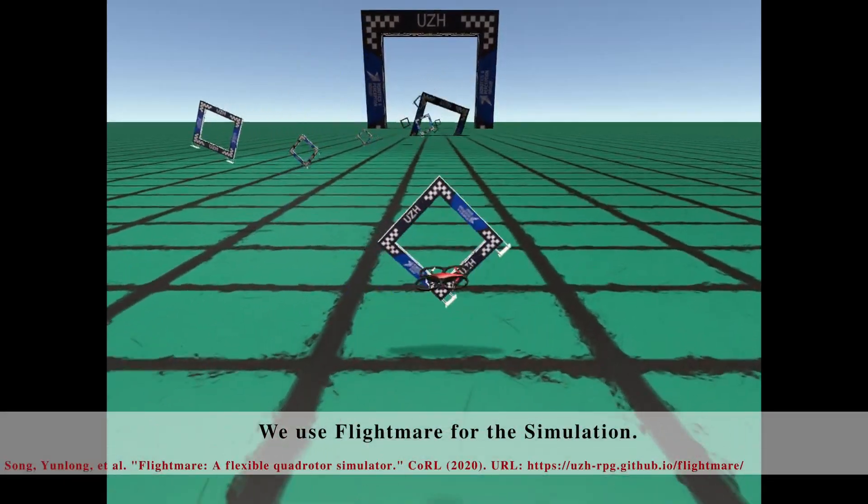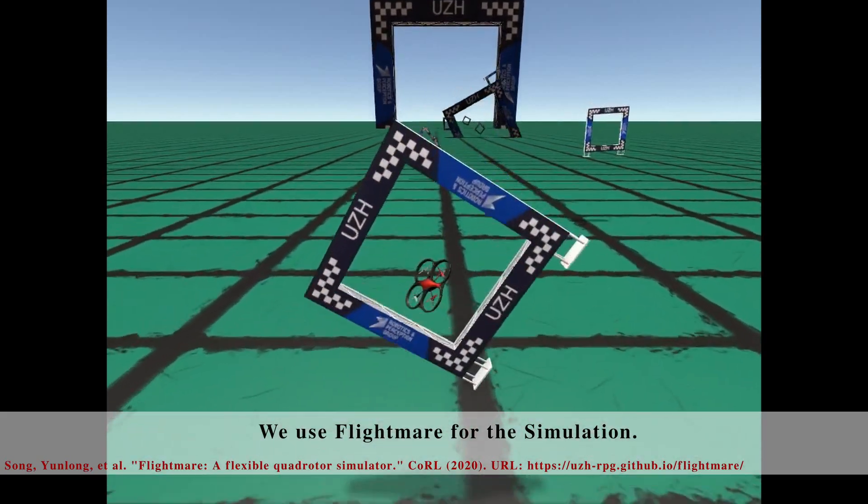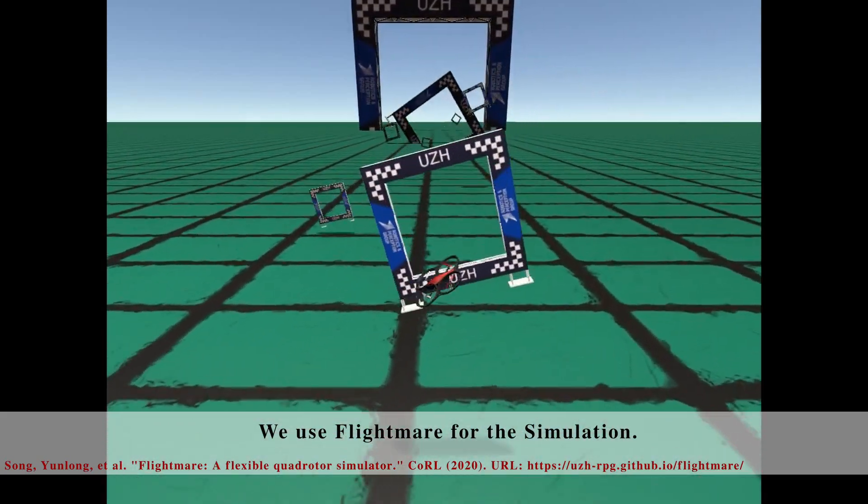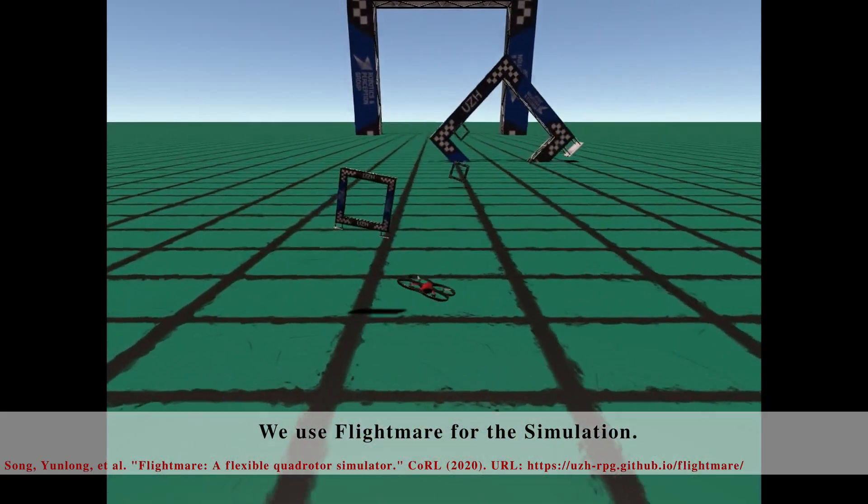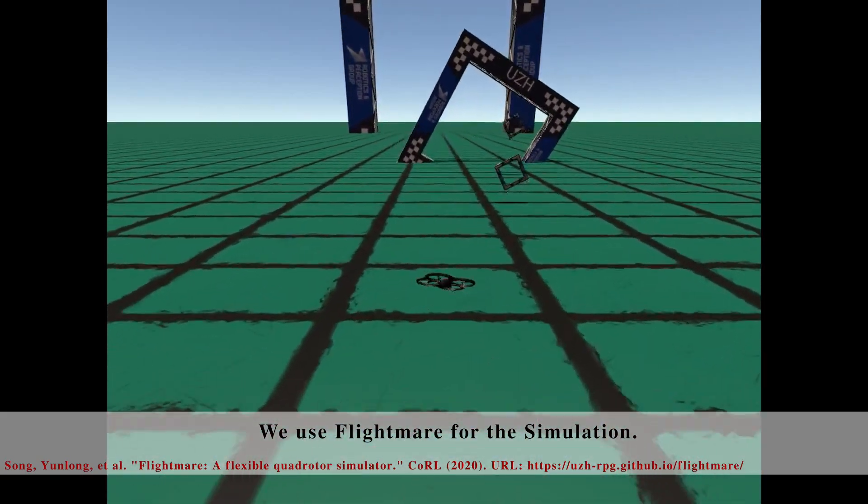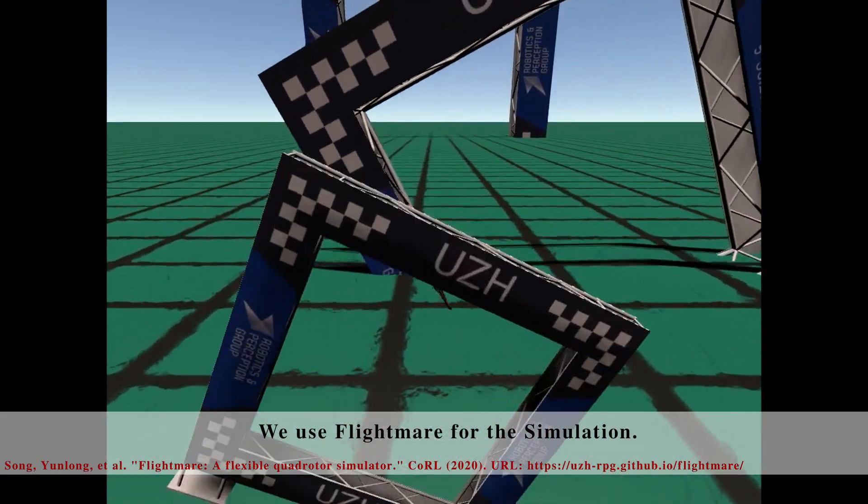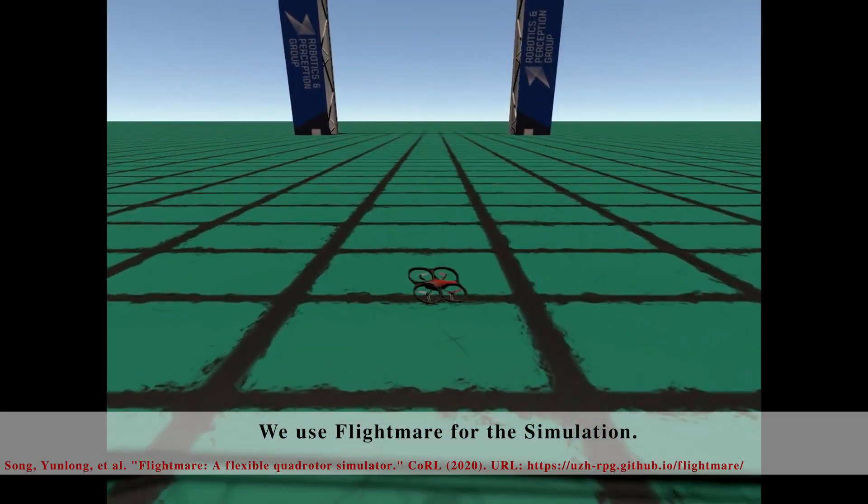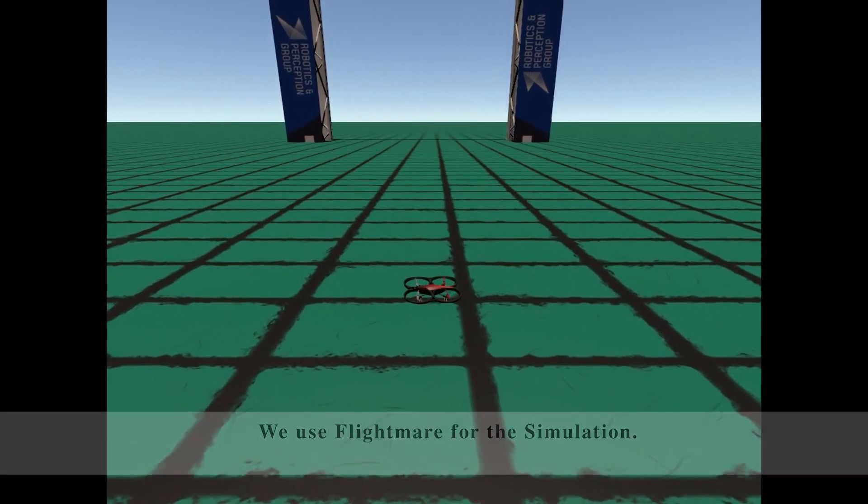In this video, a simulated quadrotor is controlled by MPC together with a high-level neural network policy. The neural network policy is used for updating the decision variables, namely the desired time for passing through the next gate. Given the desired time, the state of the quadrotor, the state of the pendulum, the quadrotor can successfully pass through all gates.